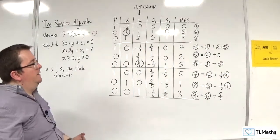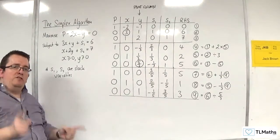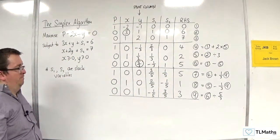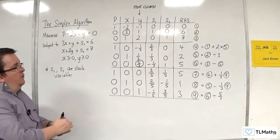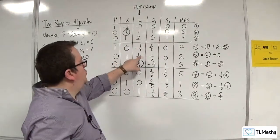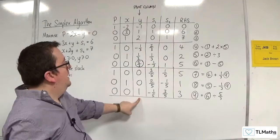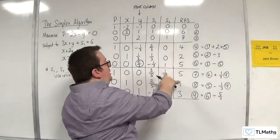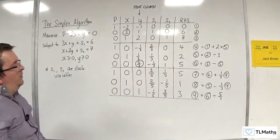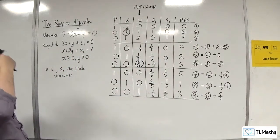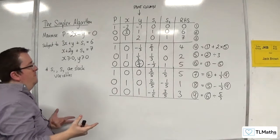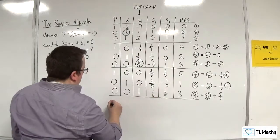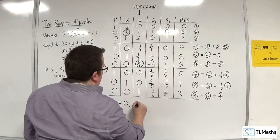Now, are we done? Yes, because there are no negatives in the top row. I cannot increase P any further. And consequently, Y, which was non-basic, is now basic. And that's swapped with S2, which went from being basic to non-basic. So what can I read off from this? Well, anything that is non-basic is 0. So S1 is 0 and S2 is 0.